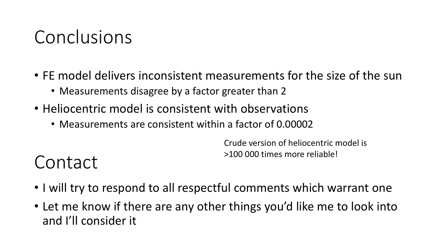So in conclusion, the flat earth model delivers inconsistent measurements for the position and the size of the sun. And these measurements disagree by a factor greater than two. However, the heliocentric model is consistent with observations. And the measurements are consistent within a factor of 0.000002. And this is a very crude version of the heliocentric model. And it is still 100,000 times more reliable than the flat earth model.